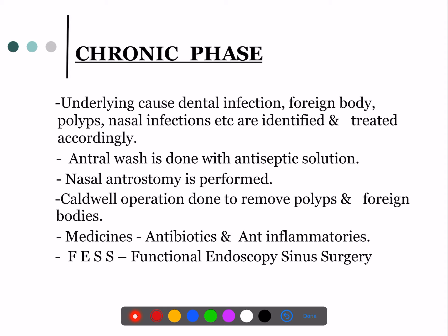Coming to the chronic phase, whenever you have a chronic phase you need to find out the etiology, so the underlying cause should be treated first. If the underlying cause is either dental infection, foreign body, or a polyp — you can see nasal polyps sometimes extending into the sinus spaces — or it may be due to nasal infection being transmitted; these should be identified and treated first.